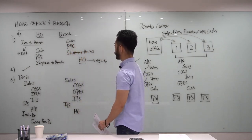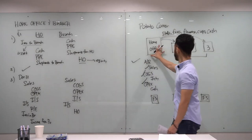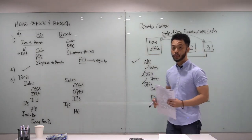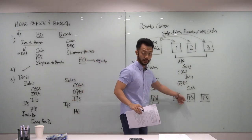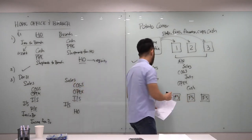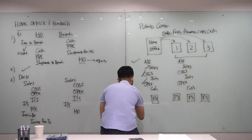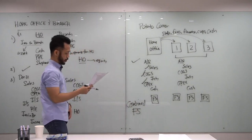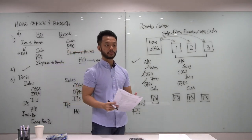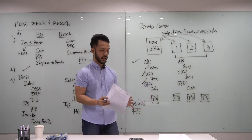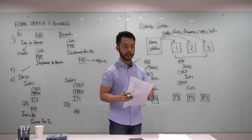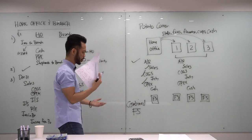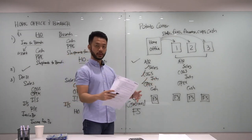At end of year, the home office and branches 1, 2, and 3 are in principle one entity. So when they prepare financial statements, they cannot present them separately. They need to present what we call Combined Financial Statements. For home office and branch, we use the term 'combined financial statements,' while in business combination we call it 'consolidated financial statements' — that's why the concepts are similar.